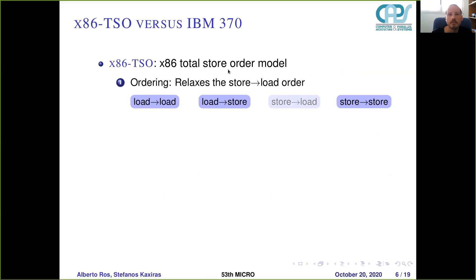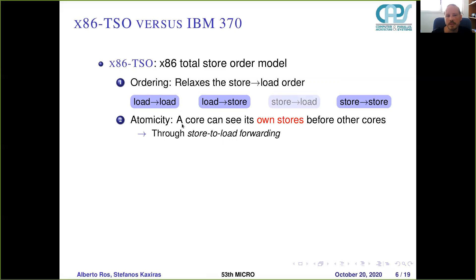x86-TSO is a total store order model, employed by x86 processors, and relaxes the store-to-load order. It enforces load-to-load, load-to-store, and store-to-store order, but relaxes the store-to-load order. Regarding atomicity, a core can see its own stores before other cores. This is done through store-to-load forwarding — there is a store that has not yet written data to cache or memory, and a following load targeting the same address can get the data from the store, seeing the value before it's written to memory and therefore before other cores can see it.